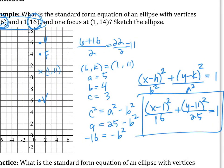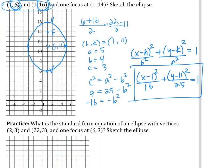All right, so we can finish sketching this so that it looks better. It goes 4 to the right and 4 to the left, and it looks like this. Any questions, or do you think you can do the next one on your own? Let's give it a try.